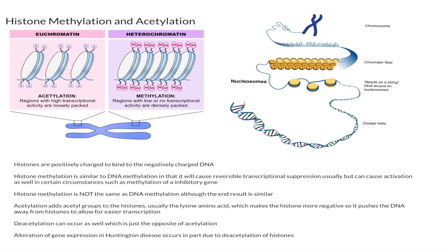If there is acetylation, there is probably also deacetylation, which is just the opposite. Deacetylation takes away acetyl groups, and then that winds the DNA around the histone more tightly, making it harder to transcribe the gene. A fun fact is that alteration of gene expression in Huntington disease occurs in part due to deacetylation of histones.